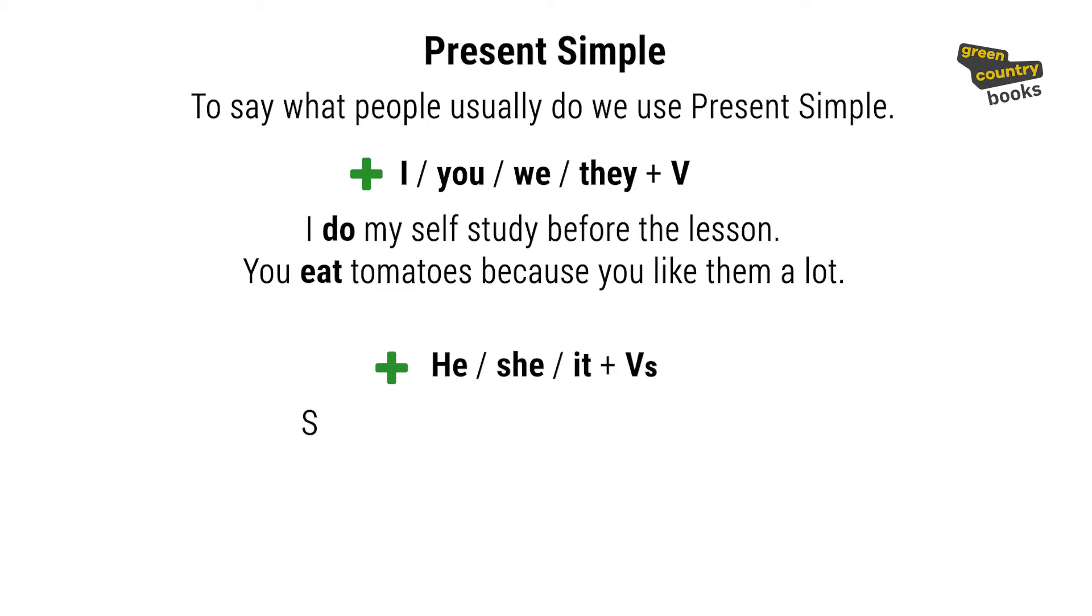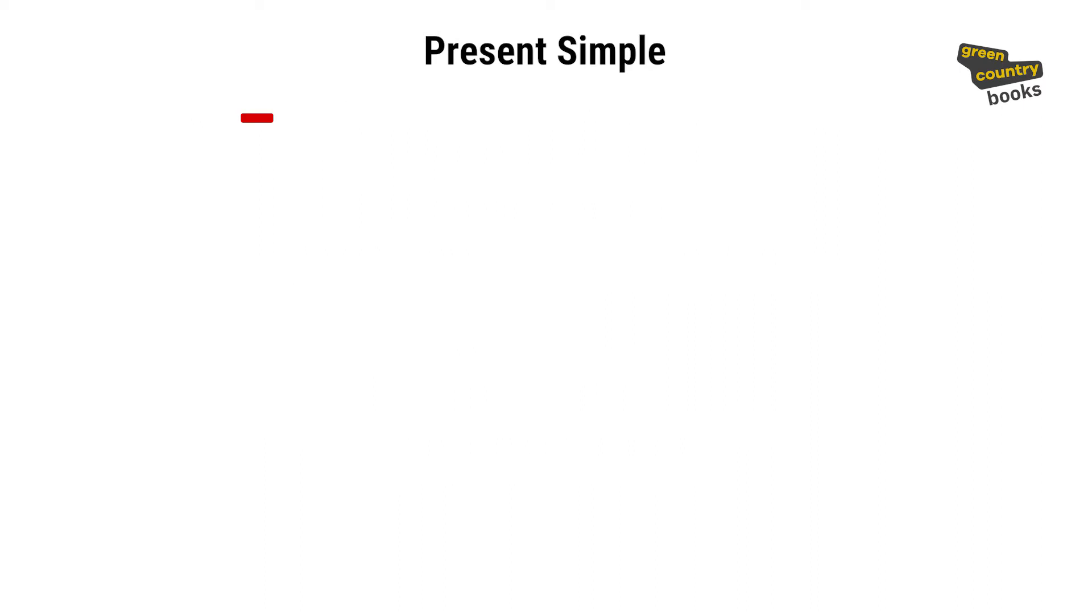With he, she, it, we add -s at the end of the verb. She watches this TV show every day. It rains a lot in autumn. What about negative sentences? With I, you, we, they, we add do not or don't before the verb. I don't like sushi. We don't have lessons on Saturdays.